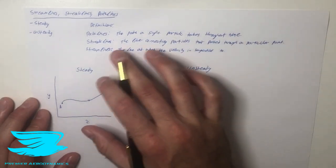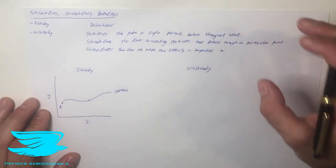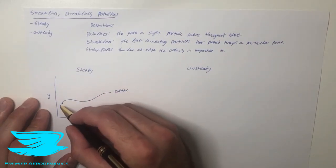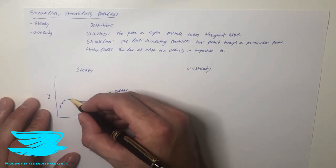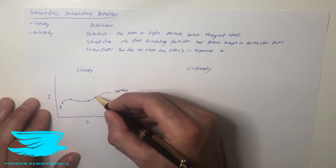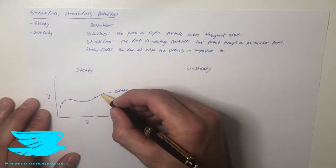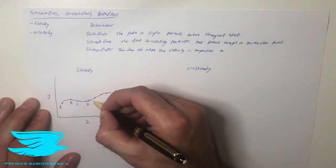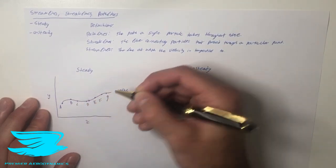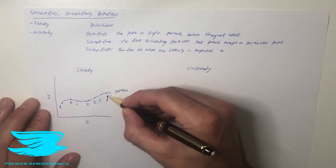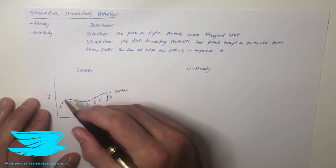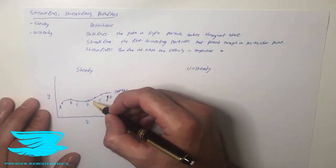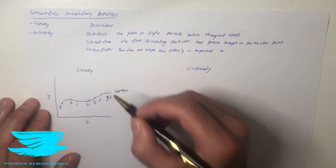The streakline is a line connecting particles that pass through a particular point. So if we want to know all the particles that pass through this point here, we find that all these particles were actually following this line because it's steady — the flow always follows this line and doesn't change with time. So particles B, C, D, E, F, and G all passed through this point at one point in time and followed this same line. That is the streakline.